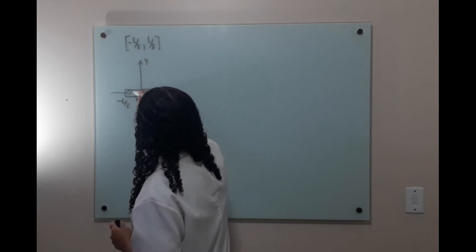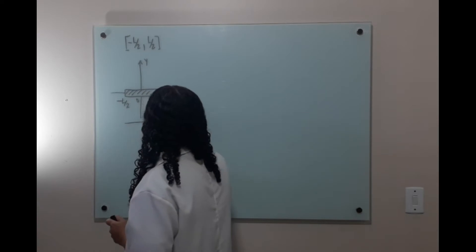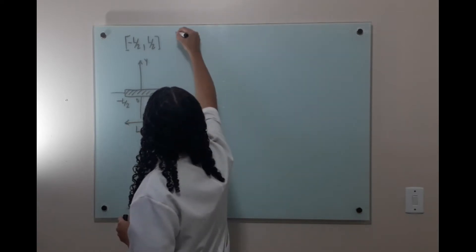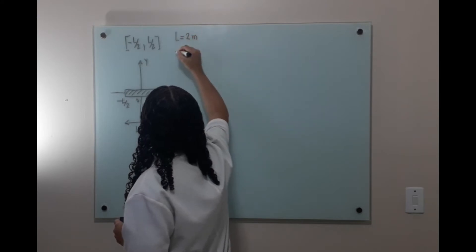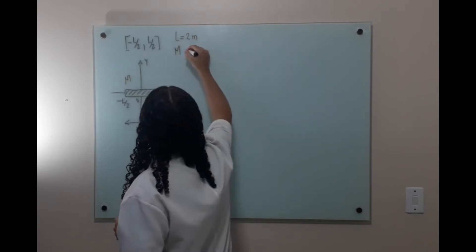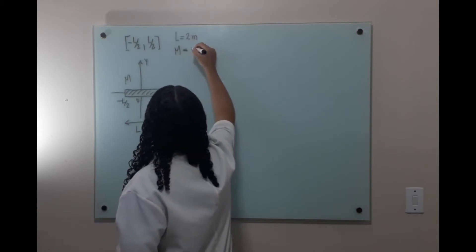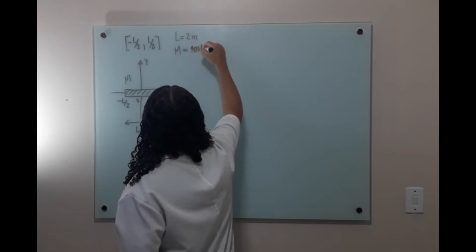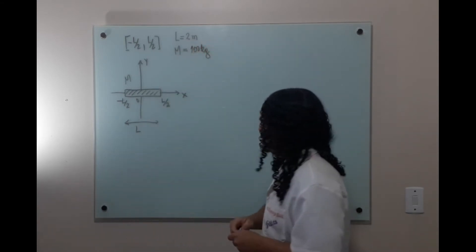Este aqui é o corpo rígido em uma dimensão, de tal maneira que o seu comprimento é L. Esse comprimento L é 2 metros e a massa do ponto material do corpo rígido vale 100 quilogramas. Então, a gente tem esse sistema.